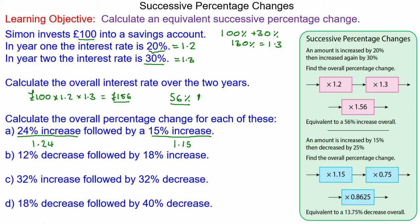So we have 1.24 multiplied by 1.15, the second percentage change, and this gives you 1.426. The original value was 1, so we've added 0.426, which is a 42.6 percent increase overall.